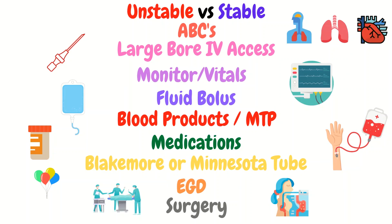Get large bore IV access as soon as you can because we're going to need it for medications, fluids, and blood products. Get your patient on the monitor to get a blood pressure and a full set of vital signs. A fluid bolus may be ordered to help maintain blood pressure and gives the lab some time to come back, especially if the patient is still relatively stable. If needed, blood products can be given — these include packed red blood cells, plasma, and platelets. Common medications include a proton pump inhibitor like Protonix to help mitigate acid production, which decreases re-bleeding rates and promotes clot formation. You may also see octreotide when variceal bleeding is expected, as it helps decrease portal hypertension and therefore the bleeding.